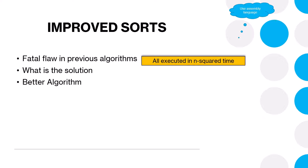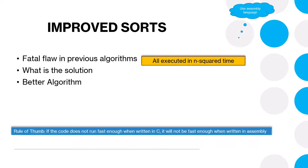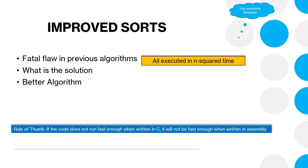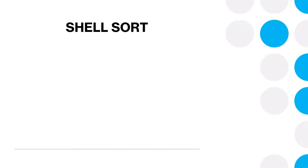Unless, of course, we have a better algorithm. Remember that as a rule of thumb, if the code does not run fast enough when written in C, it's not going to be fast enough when written in assembly. It's all about the algorithm. So let's look at a different algorithm — we're talking now about the Shell Sort.